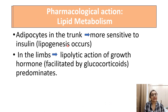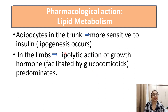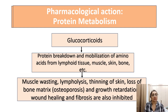Adipocytes in the trunk are more sensitive to insulin, and lipogenesis can occur in the limbs. The lipolytic action of growth hormone is predominant and is facilitated by glucocorticoids.